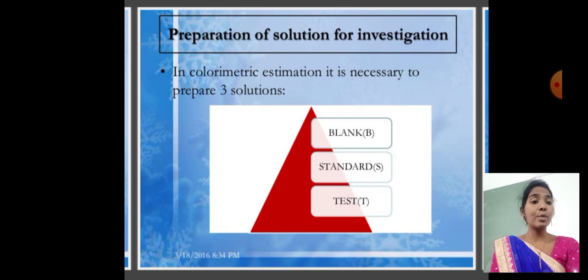We need to measure the colored solution concentration. In colorimetric estimation it is necessary to prepare three solutions: blank solution, standard solution, and test solution. The blank solution is a clear solution with very little absorbance. The standard solution creates a known absorbance. The test solution is used to measure the unknown absorbance and concentration.